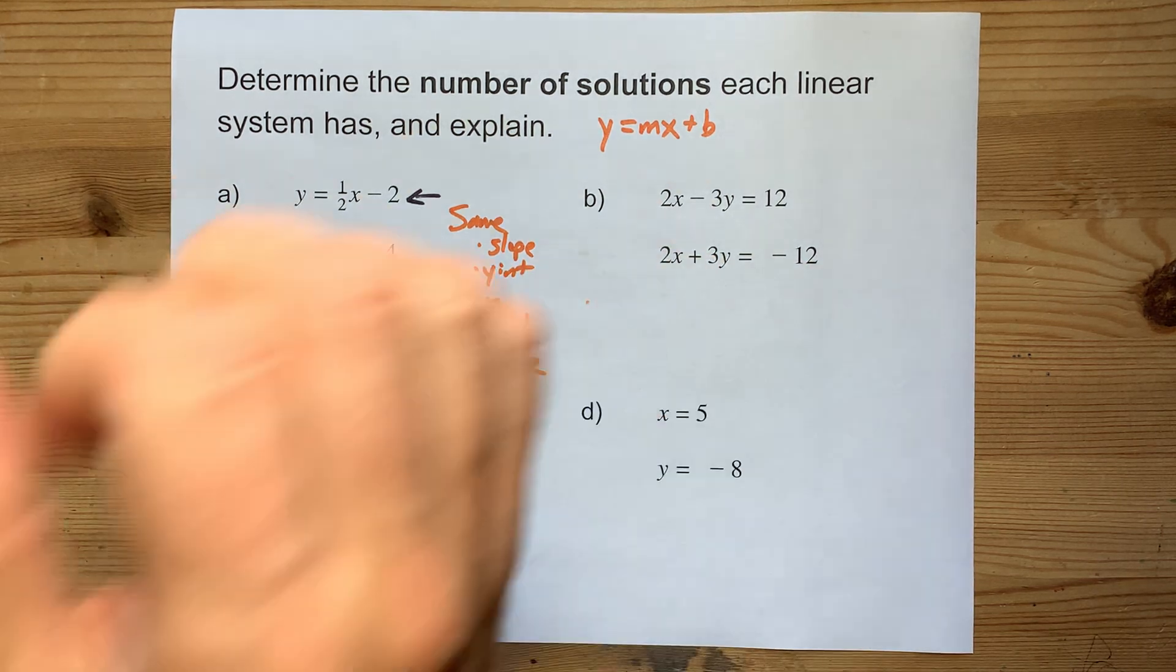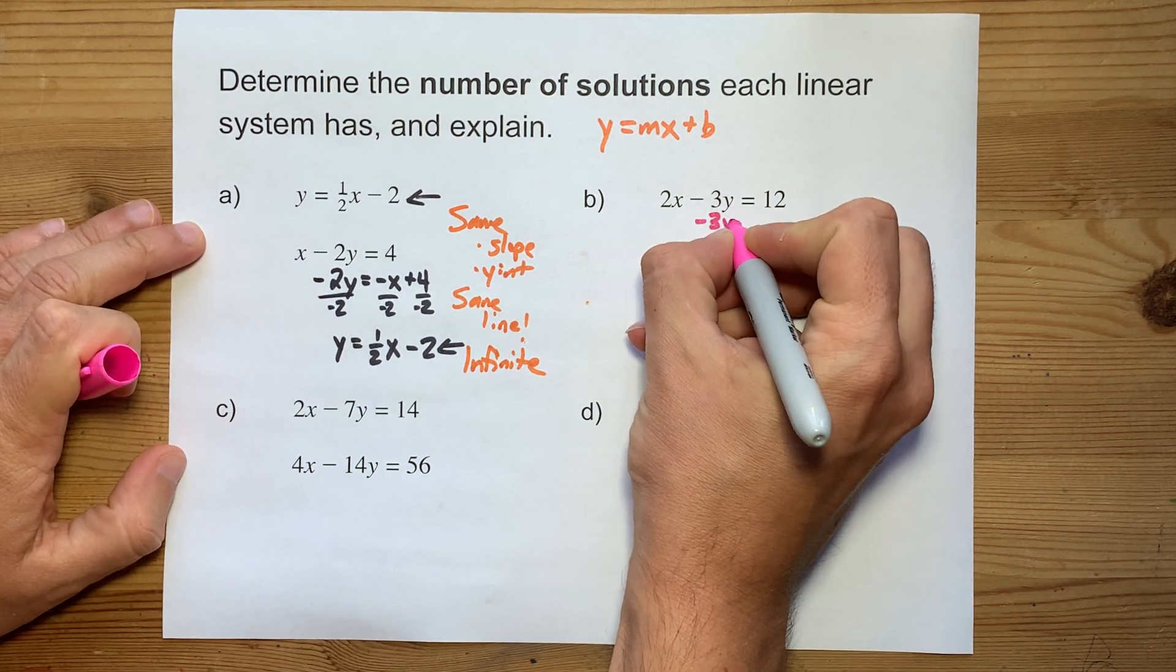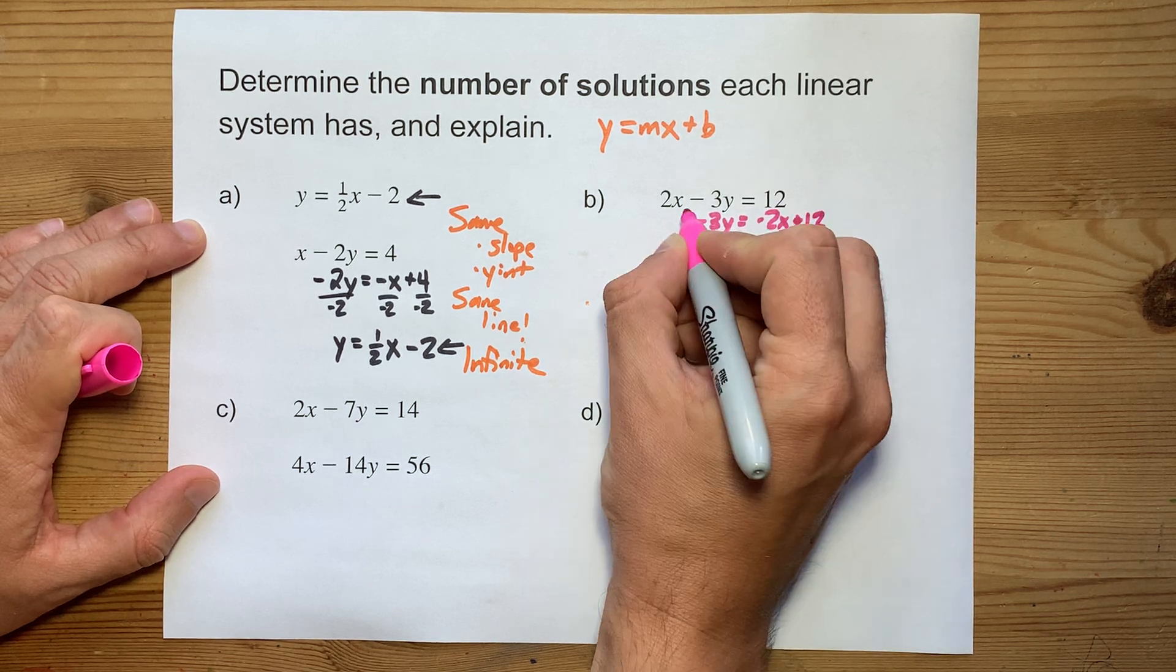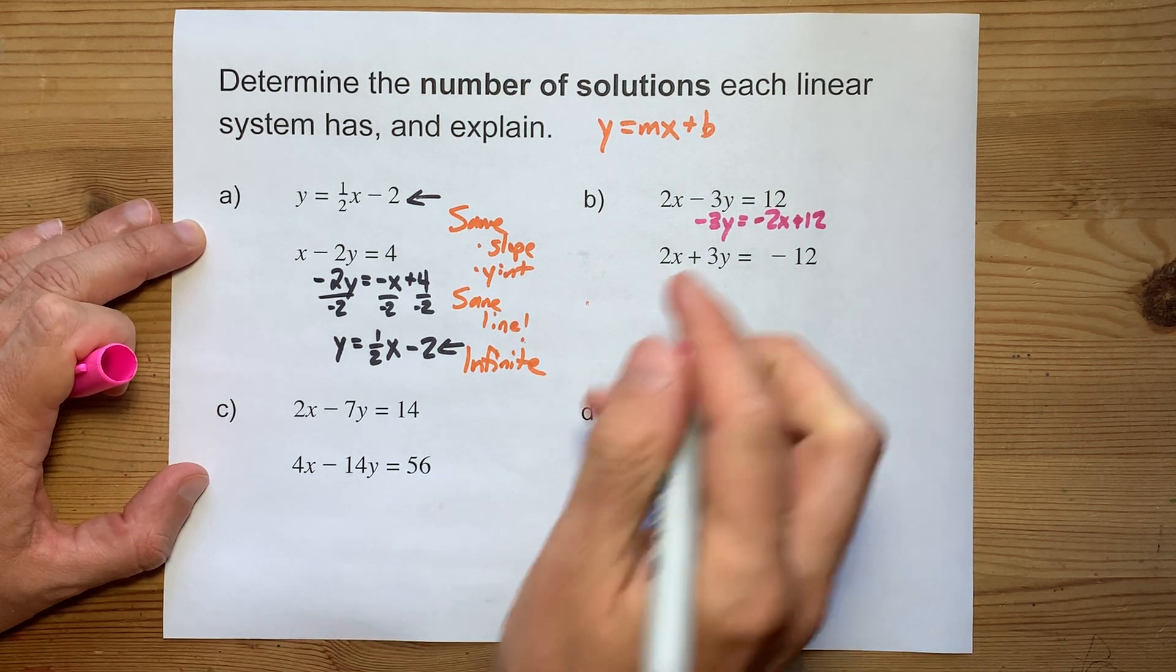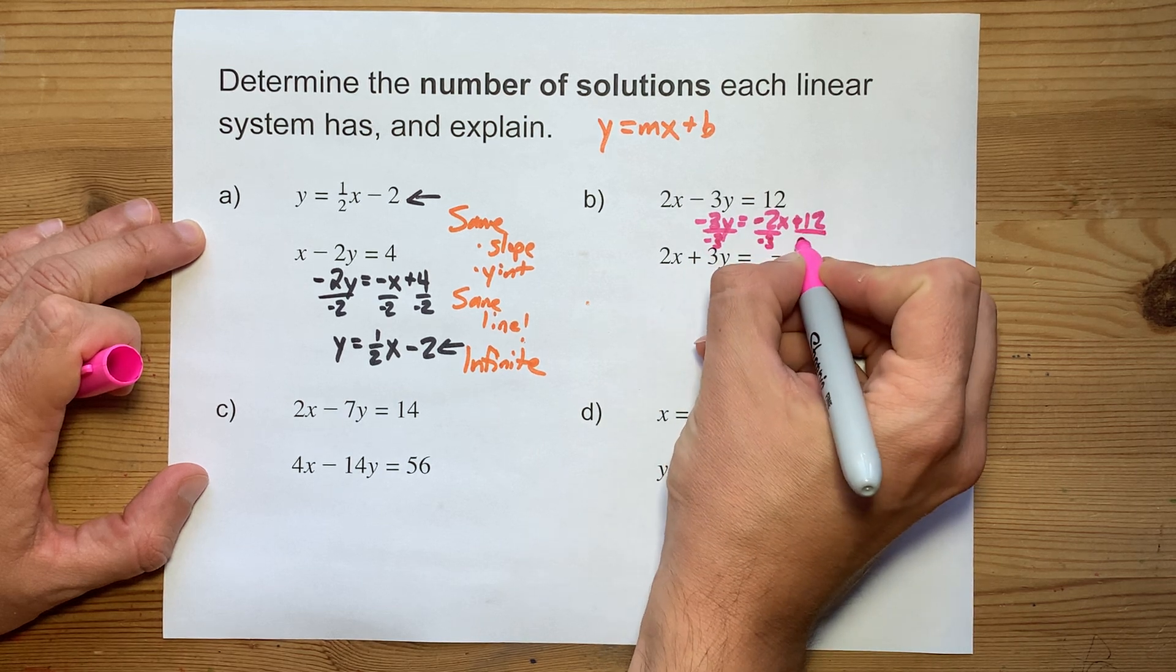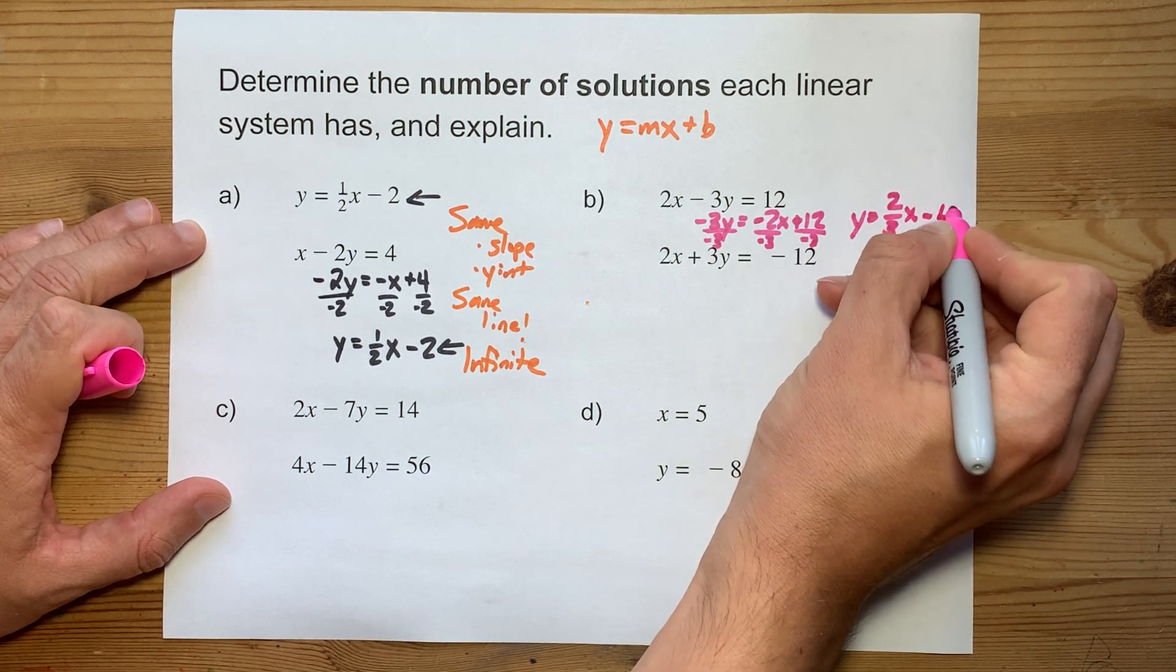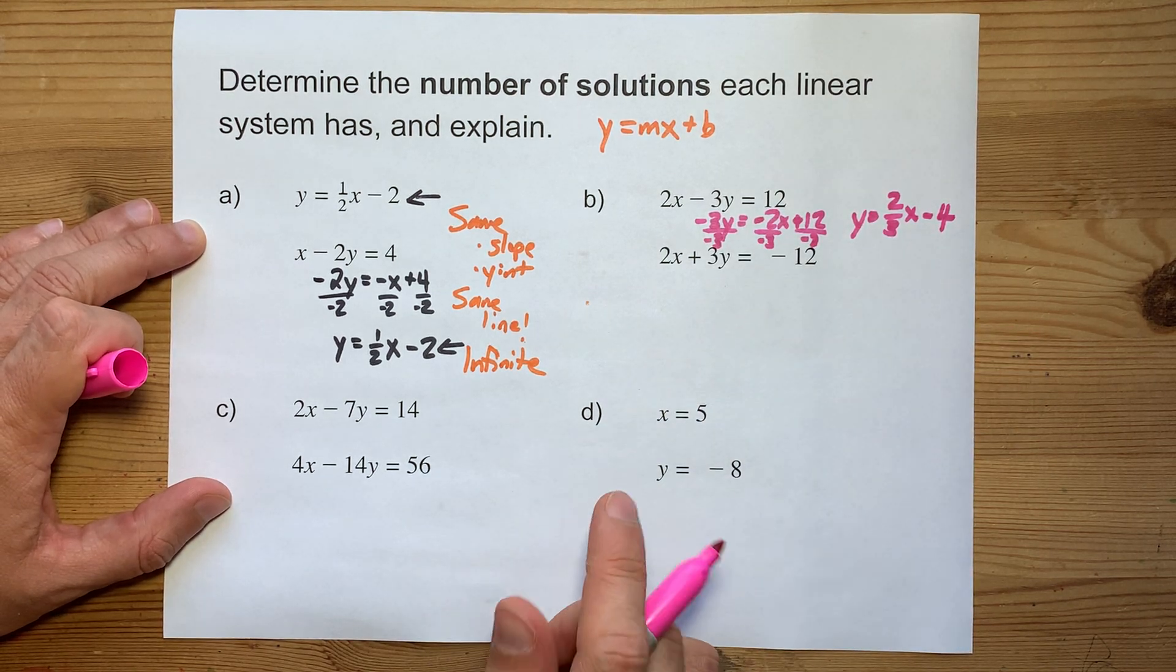Now we're going to do that a couple more times with these. I'm going to keep my y's on the left, move my 2x to the right-hand side of the equal sign. Note the 2x becomes minus 2x, and the 12 stays positive 12. Divide everything by negative 3. I get y equals 2 over 3 times x minus 4. Positive 12 divided by negative 3 gives me that negative 4.